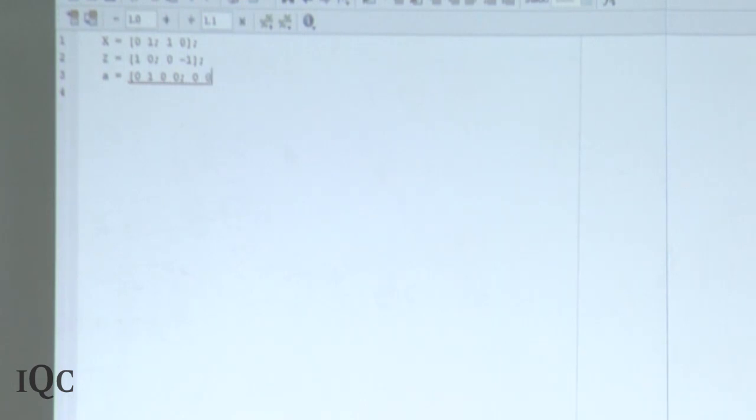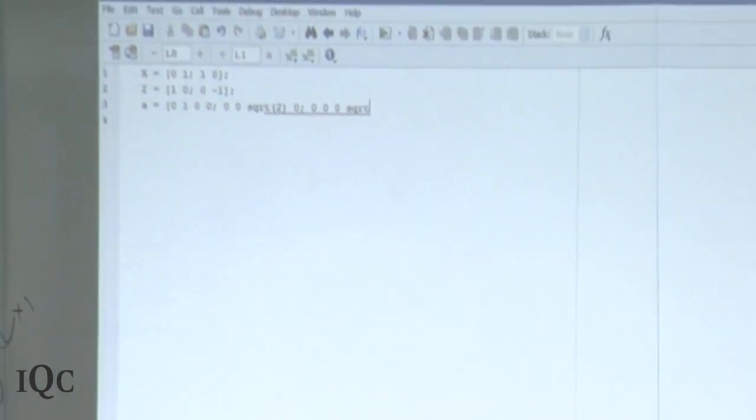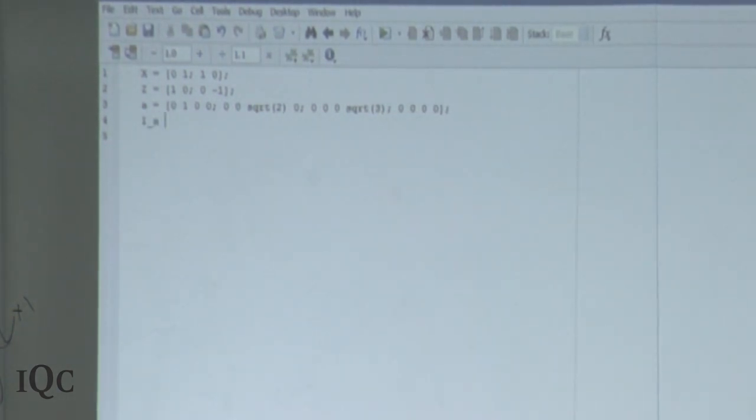I put a semicolon at the end to suppress the output so I don't get this long string every time. I'm creating my Z matrix, and we have the identity matrices and the ladder or raising and lowering operators.